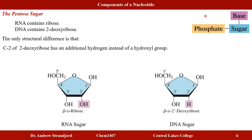The sugars in nucleotides are pentose sugars, meaning they contain five carbons. RNA contains ribose — specifically beta-D-ribose. DNA contains deoxyribose — beta-D-2'-deoxyribose — which is a very similar sugar but is missing one hydroxyl group at carbon two, replaced by a hydrogen. The only difference between these two sugars is that hydroxyl group versus hydrogen at carbon number two.